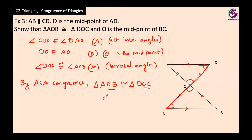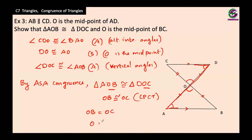Since OB and OC are corresponding parts of congruent triangles, they are equal — corresponding parts of congruent triangles are congruent (CPCT). Therefore, OB equals OC, which means O is the midpoint of BC. Hope that's clear.